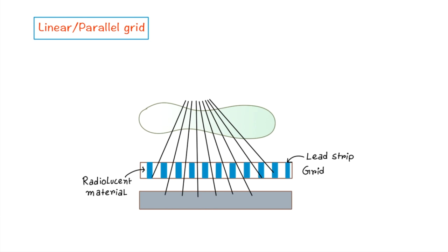Now if you see, the central rays of the beam are almost parallel. But the peripheral rays are divergent. So at the periphery, the divergent primary photons get cut off or get absorbed.